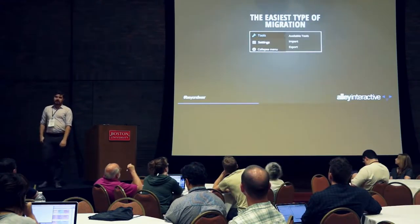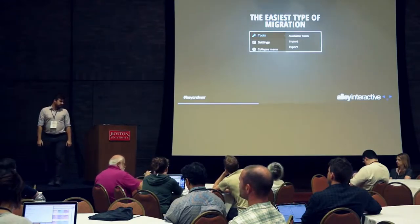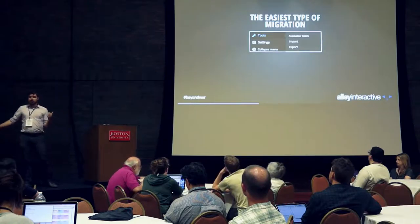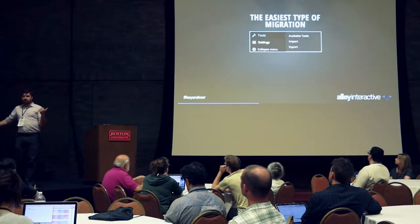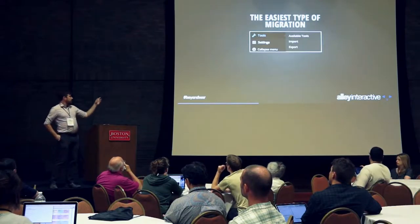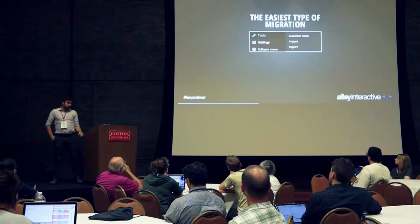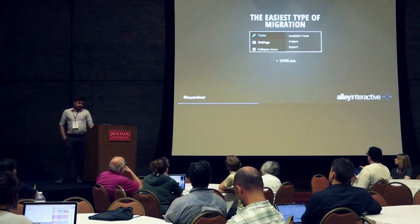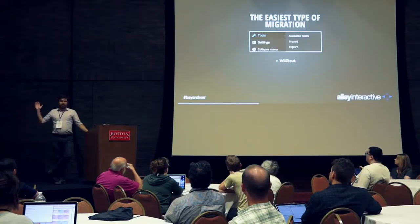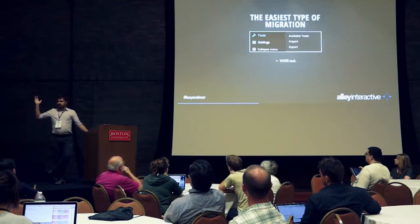So now let's talk about what you actually do when you approach your content migration. This is the easiest type of migration — a screenshot from the WordPress dashboard. If you go to your Tools menu, you'll see import and export options. The export option will give you a WXR file. Is everyone familiar with or heard of a WXR file before? Has anyone used them to some degree?